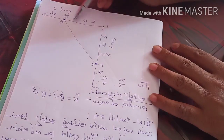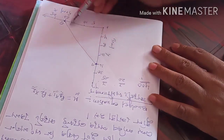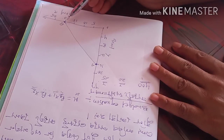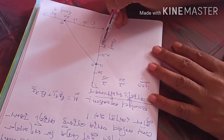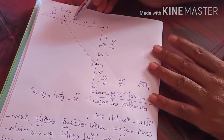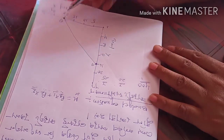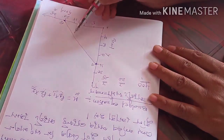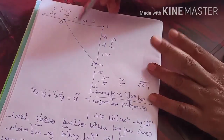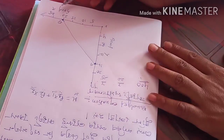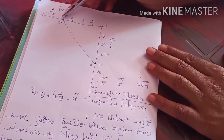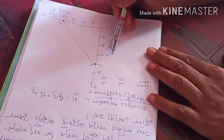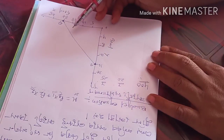A question may come: why is the budget line downward sloping? The budget line is downward sloping because if a consumer wants to purchase one commodity more, he has to sacrifice another commodity because his budget is limited. That's why the budget line is downward sloping.